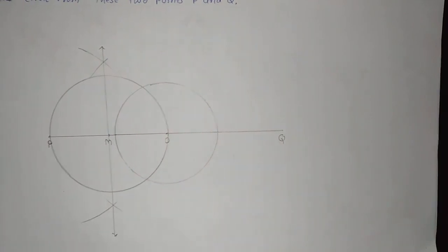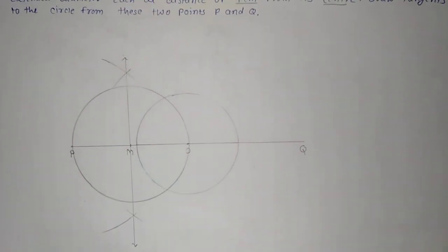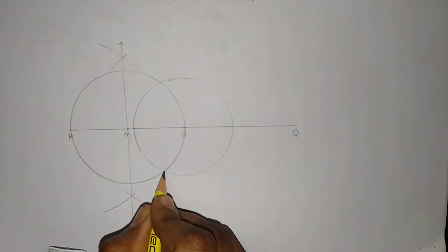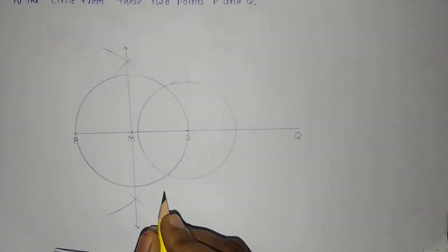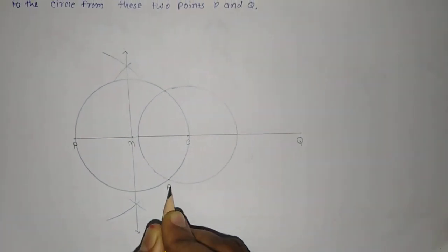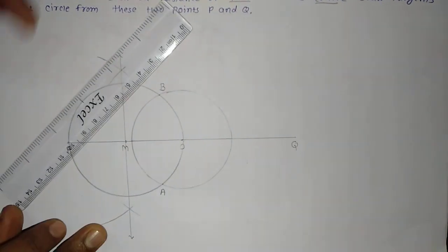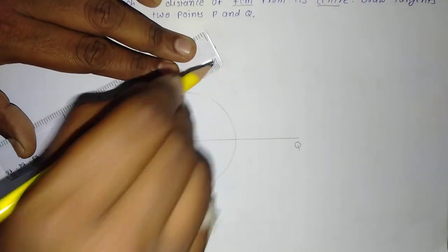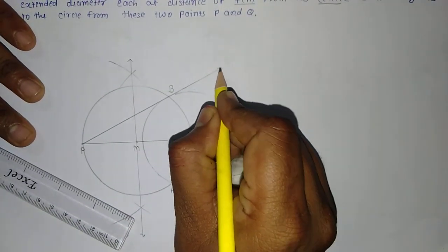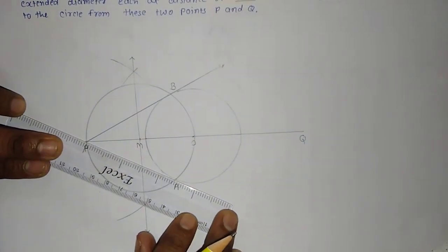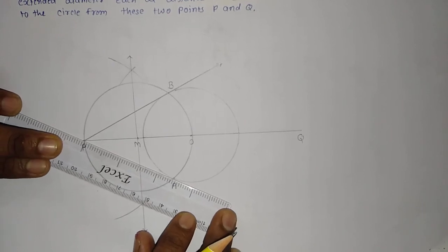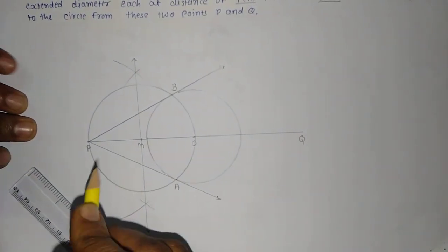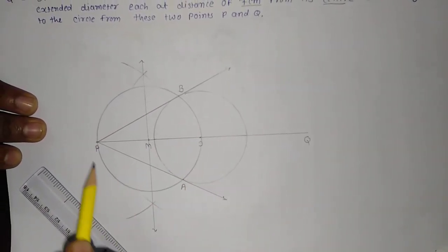This circle drawn with center M and radius MO intersects the original circle (center O, radius 3 cm) at two distinct points. Let us name these points A and B. I will draw rays PA and PB. Both PA and PB are the tangents from point P to the given circle.